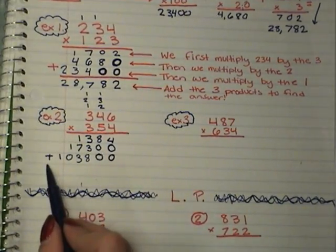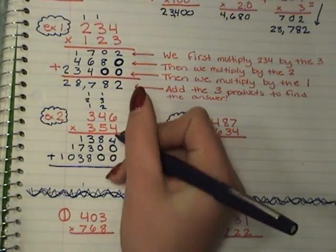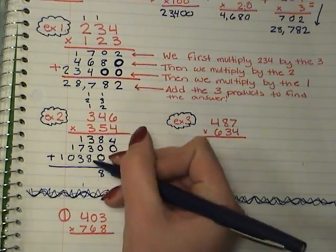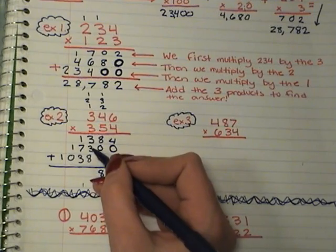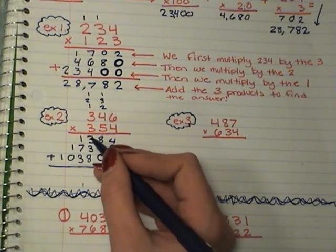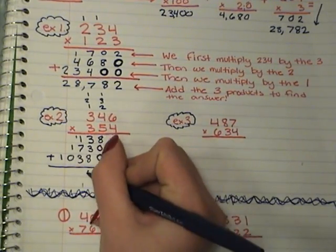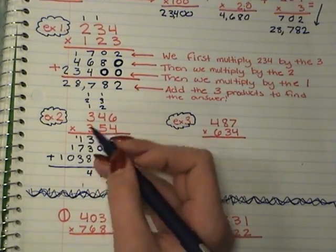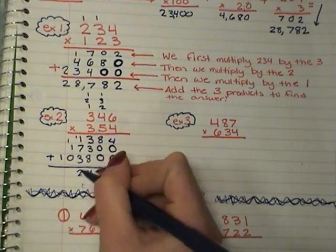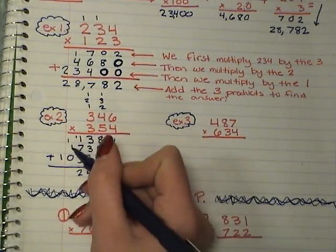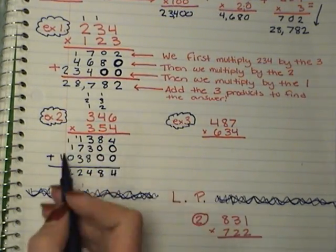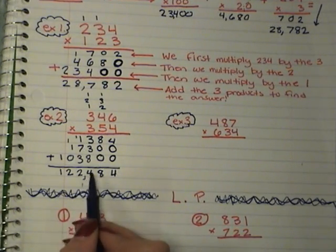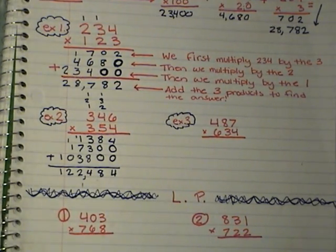Now I need to add these all up together. 4. 8. 8. 9, 10, 11, 12, 13, 14. 1, 4, 7 plus 3 is 10, plus 11, 12. Alright. 1 plus 1, 2. And 1. 1, 2, 3. 122,484.